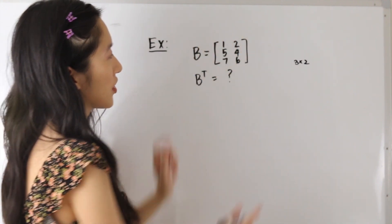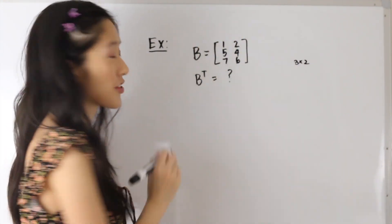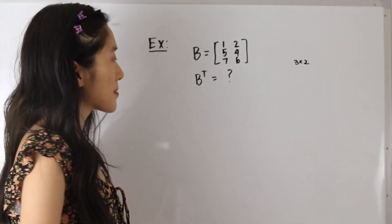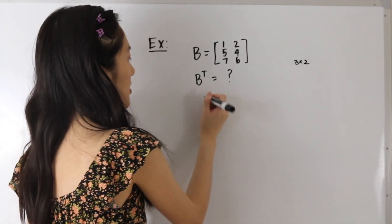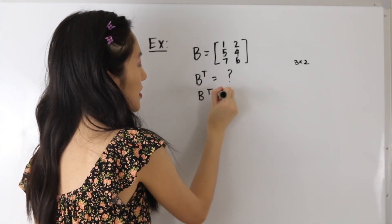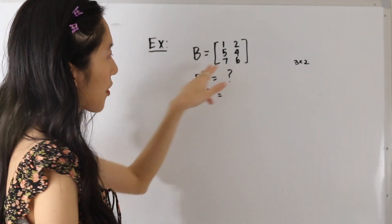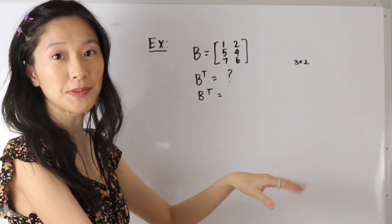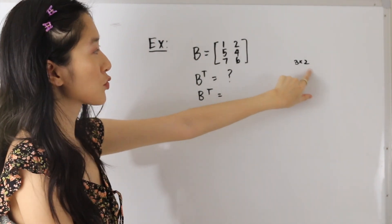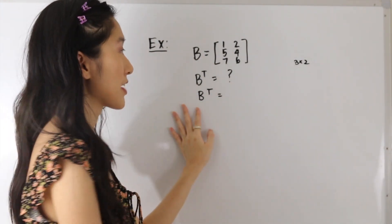So that means it has 3 rows, 1, 2, 3, and 2 columns. So now we want to determine what the transpose of this matrix is. Because the rows become the columns and the columns become the rows, the order of our matrix will be reversed for our transpose matrix.